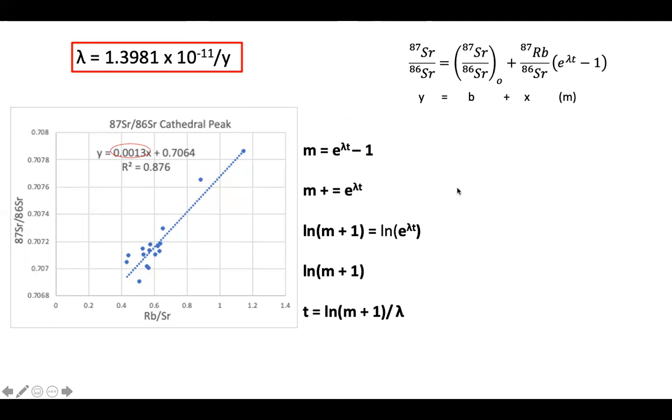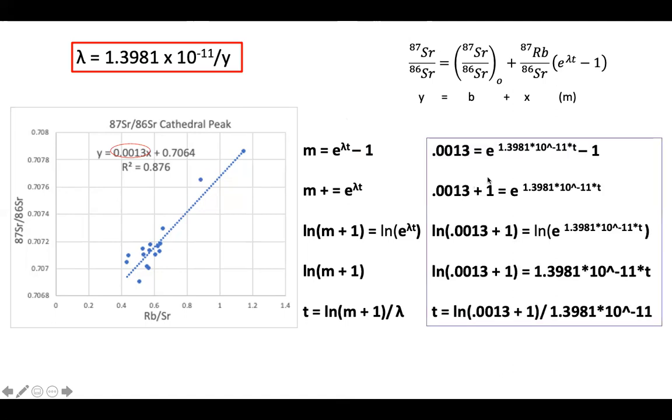So we have lambda and we have m, so now we can solve for t. By plugging these values into the equation and solving for t, we find that t equals 92.92 million years, which means the rocks of this sample are that age.